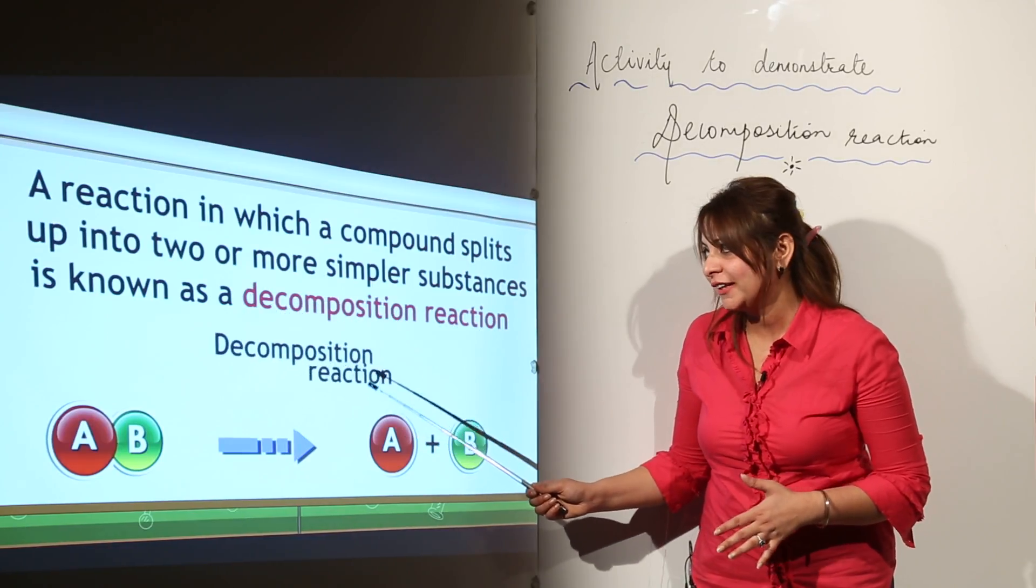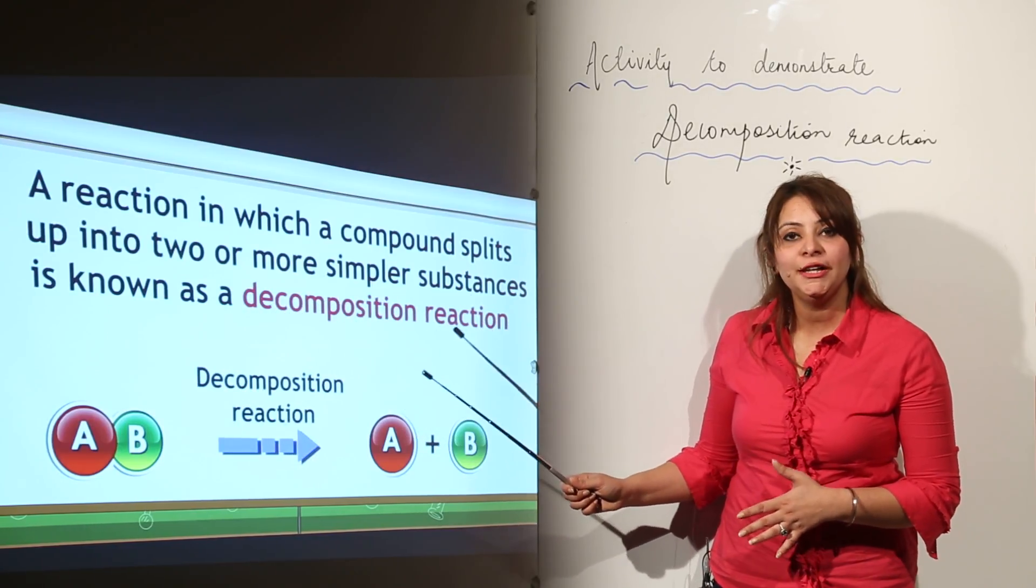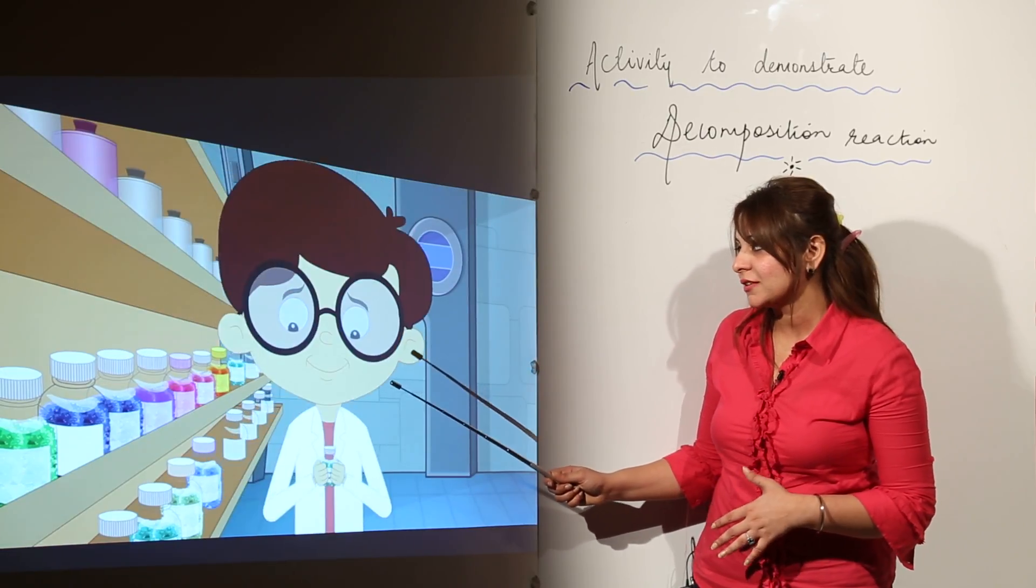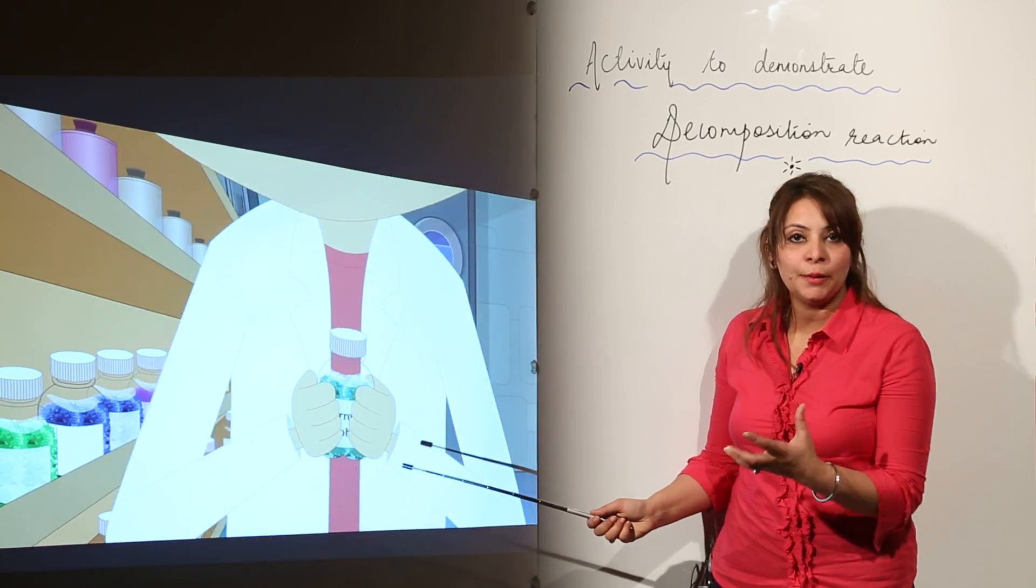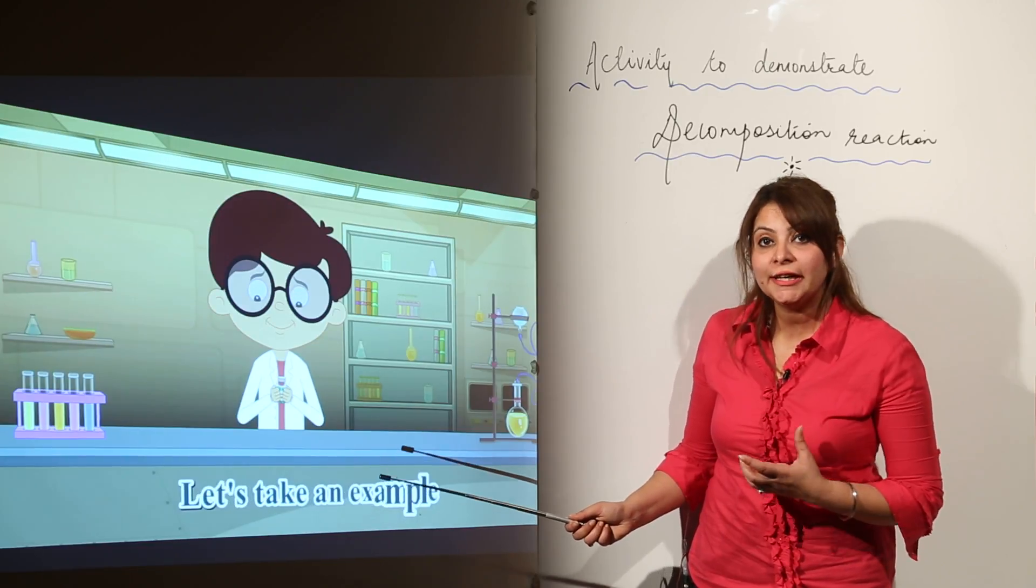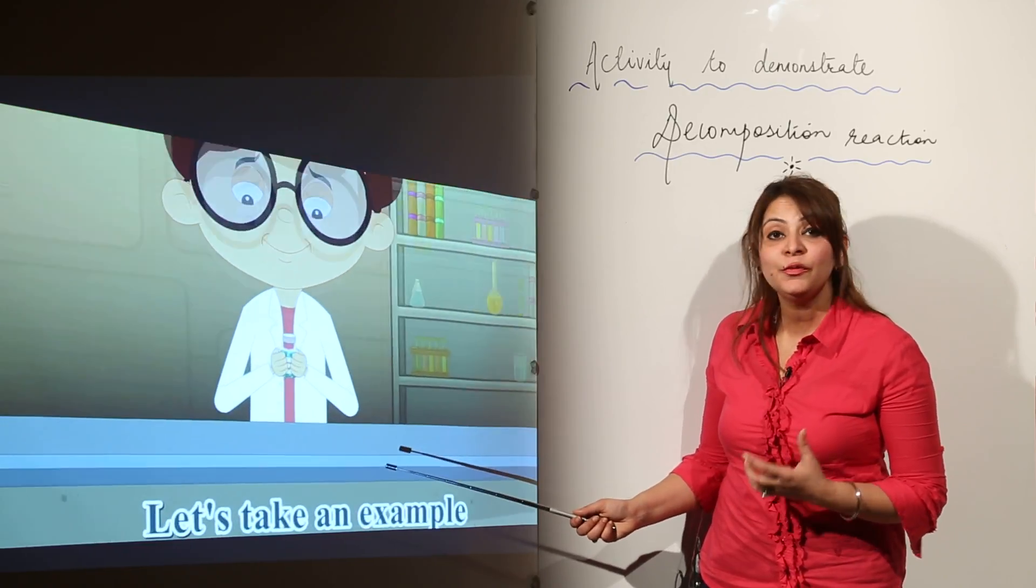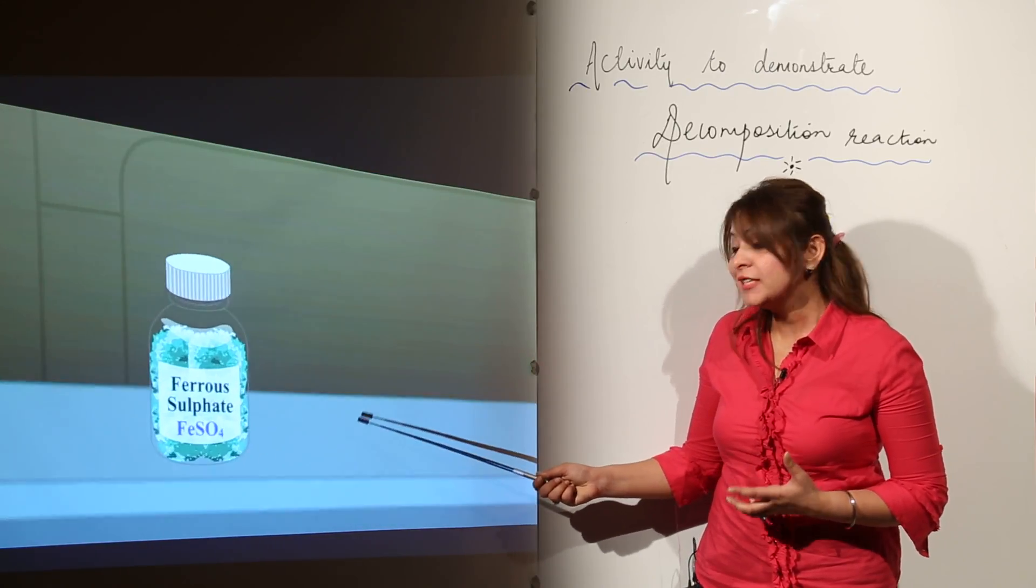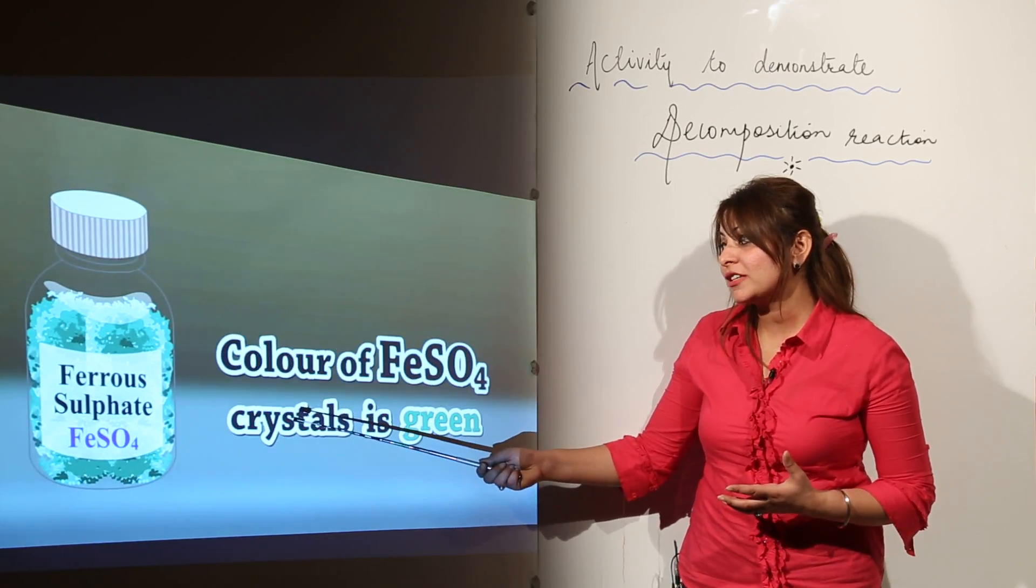We'll explain with an example how decomposition takes place. We are picking some chemicals which can undergo decomposition reaction. Here we have ferrous sulfate, and as you can see, the ferrous sulfate crystals are green in color.